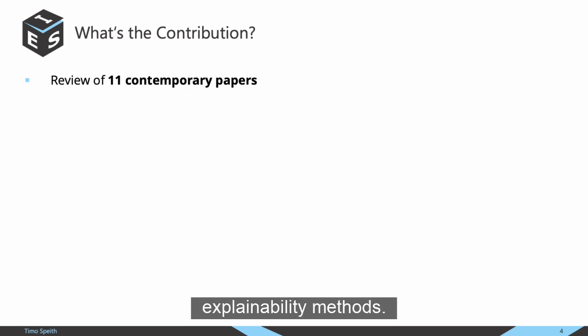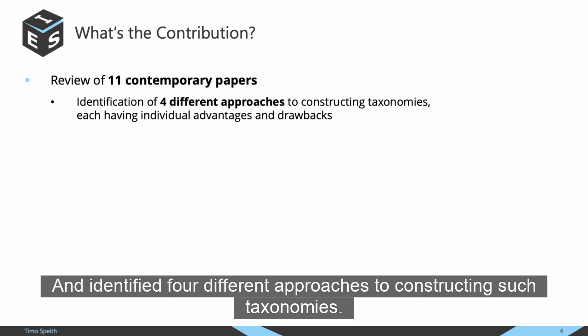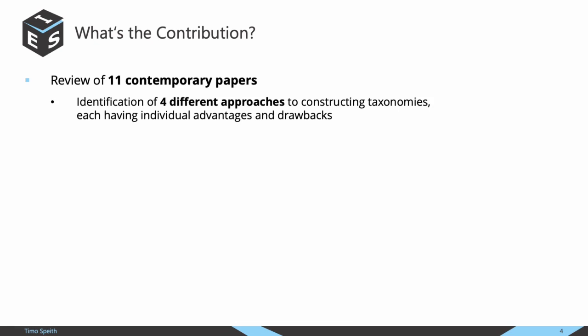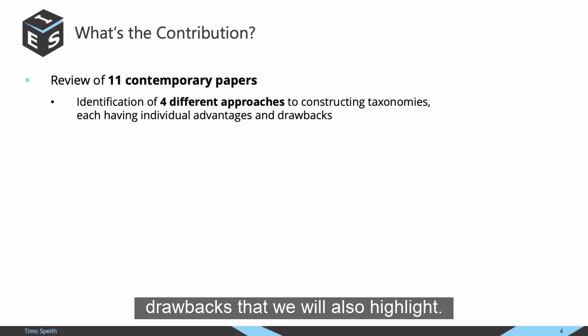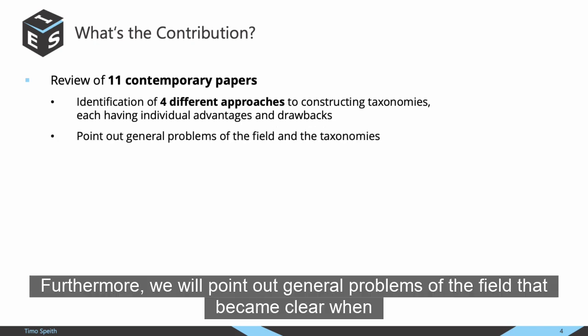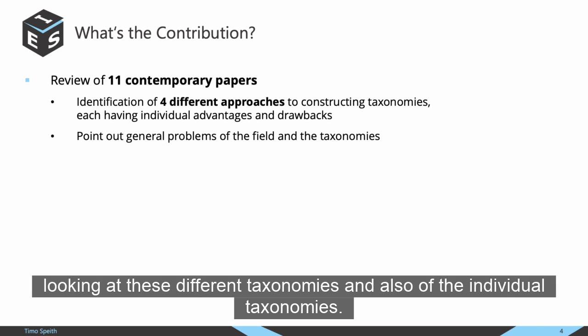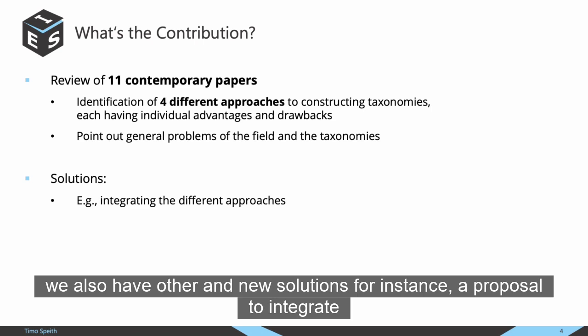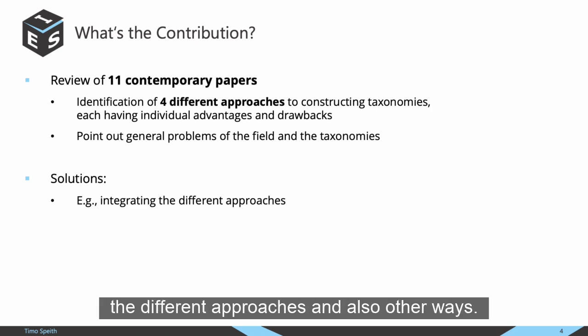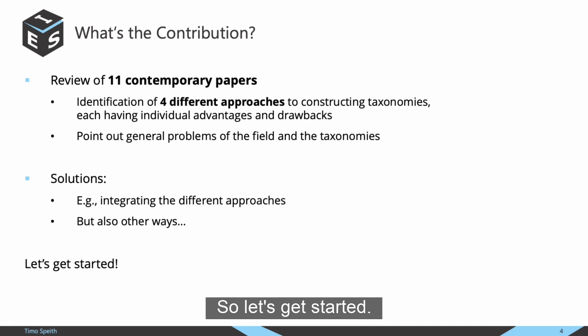To provide a remedy to this confusion, we reviewed 11 contemporary papers that proposed some form of taxonomy of explainability methods and identified four different approaches to constructing such taxonomies. Each of these taxonomies has its individual advantages and drawbacks, which we will highlight. We will also point out general problems of the field that became clear when looking at these different taxonomies. In addition, we have a proposal to integrate the different approaches along with other new solutions.